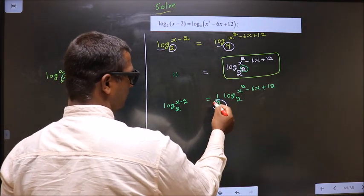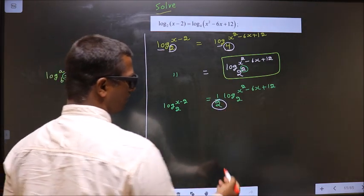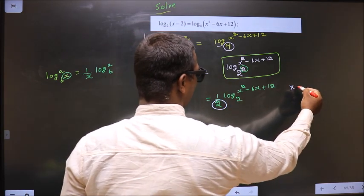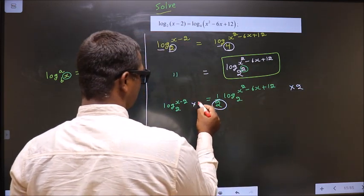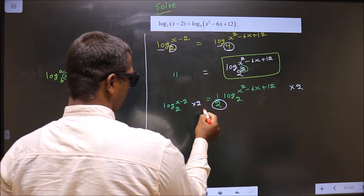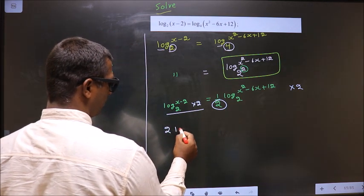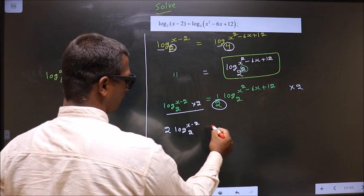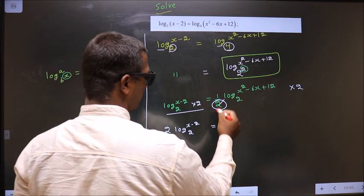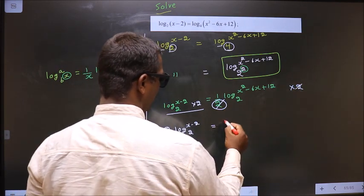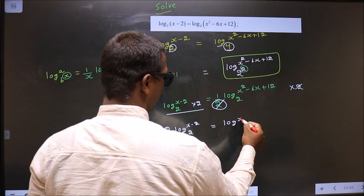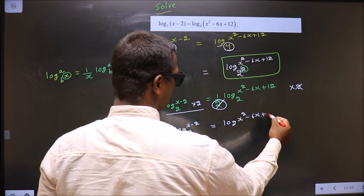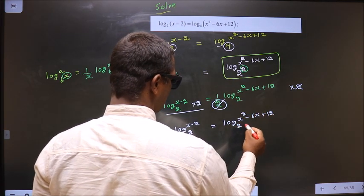Now we need to remove the denominator 2. For that, multiply by 2 on both sides. So on the left we get 2 log(x minus 2) base 2, and on the right the 2 cancels out, leaving log(x squared minus 6x plus 12) base 2.